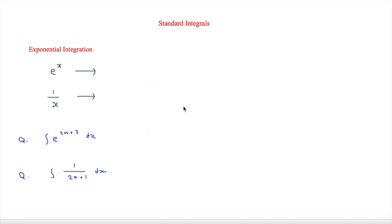The next thing to look at is exponential integration. We know that e to the x differentiates to give e to the x, so integrating e to the x also gives e to the x. We also know that ln x differentiates to give 1 over x, so integrating 1 over x gives ln modulus x. The modulus is important because you cannot input a negative number into ln.